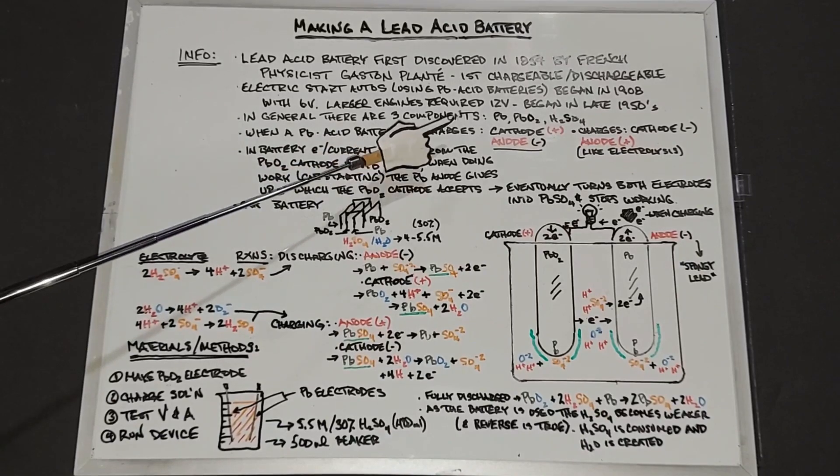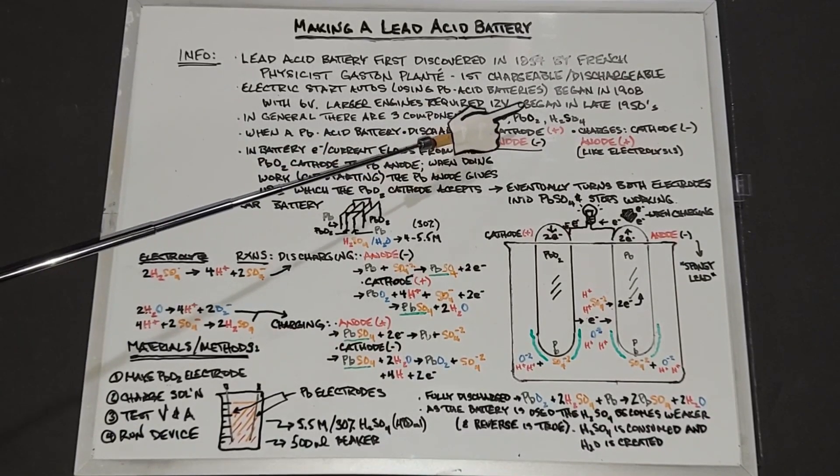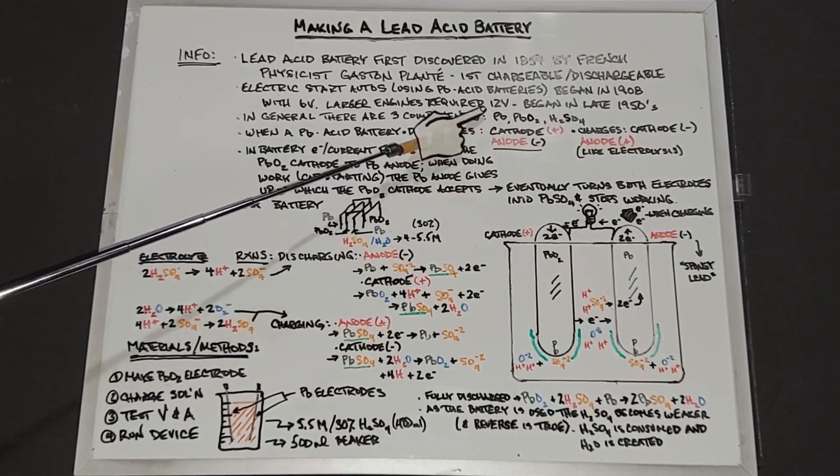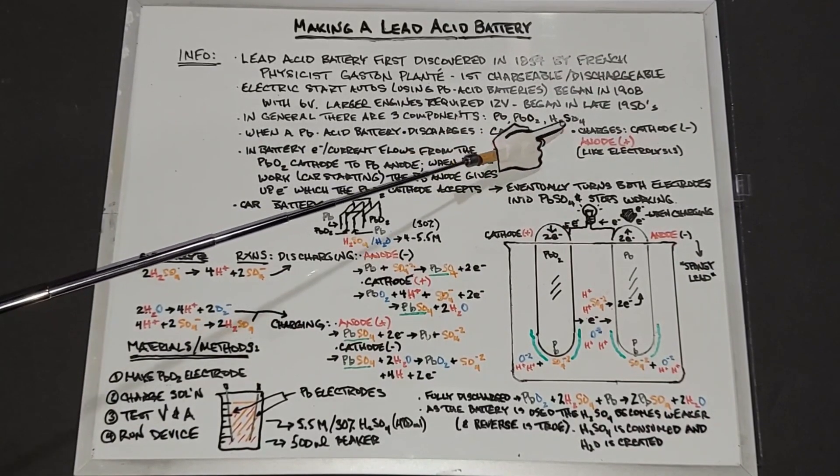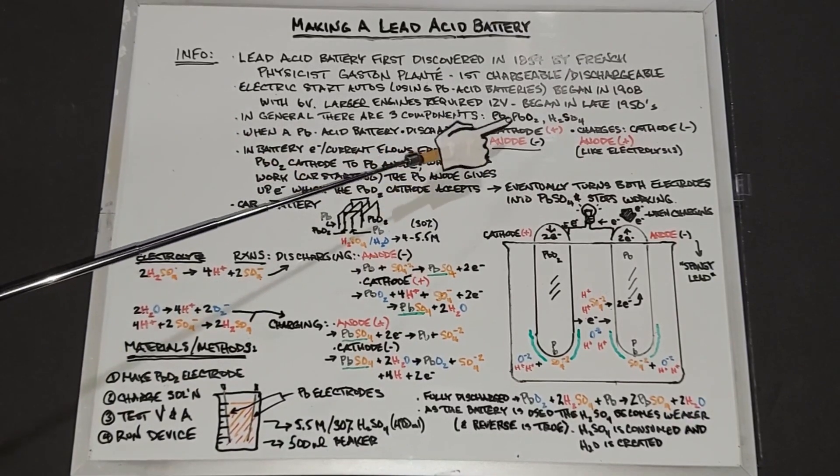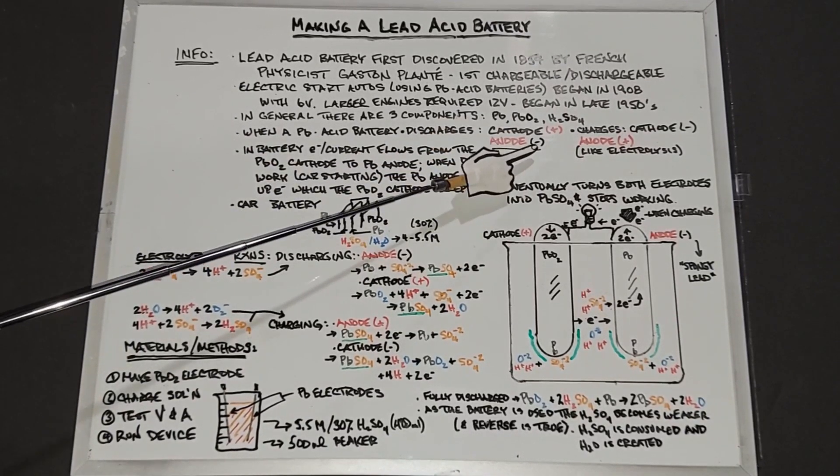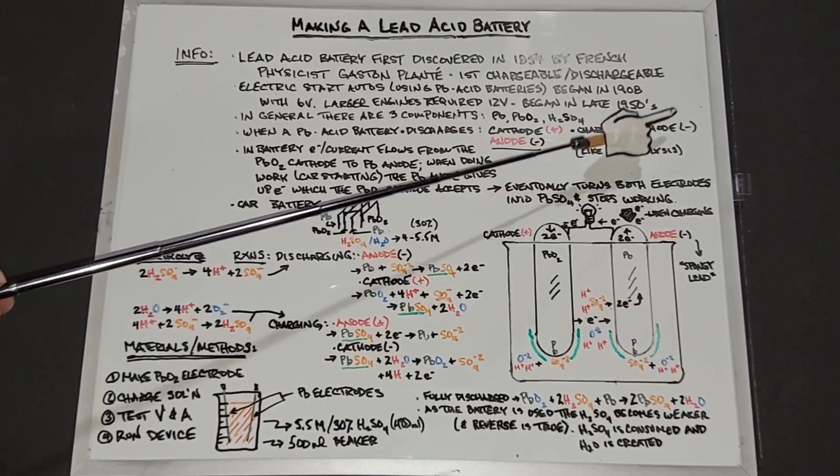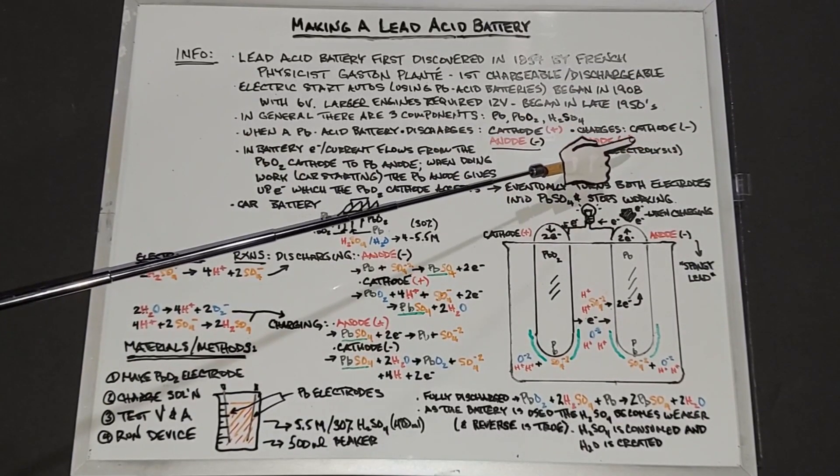In general, there are three components to a lead acid battery: lead, lead dioxide, and sulfuric acid. These two make up the electrodes and this makes up the electrolyte. When a lead acid battery is discharged, the cathode is positive and the anode is negative. When it's being charged, the cathode becomes negative and the anode becomes positive.